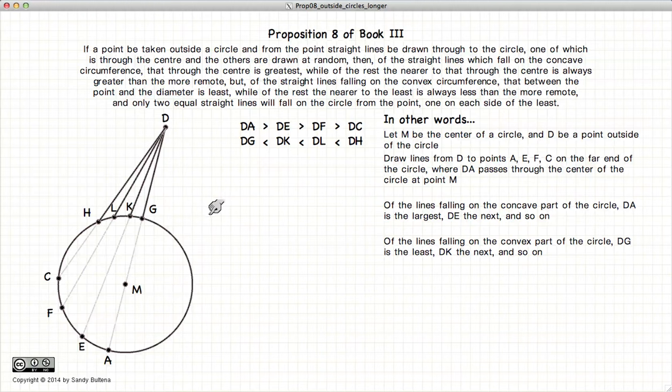The second part of this proposition states that if you take the same lines, but look at where they intersect on the convex part of the circle, DG will be less than DK, which will be less than DL, which will be less than DH. So as you move away from the center of the circle, the lines will get longer.